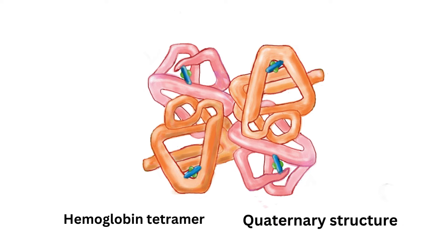Hemoglobin A has a quaternary structure, which is the three-dimensional structure of the hemoglobin.